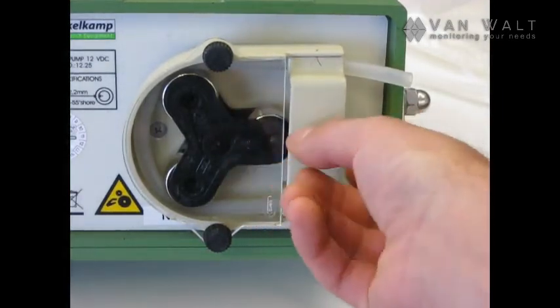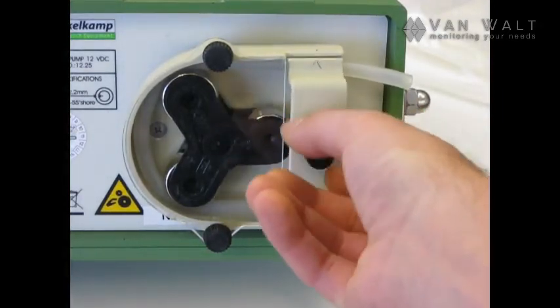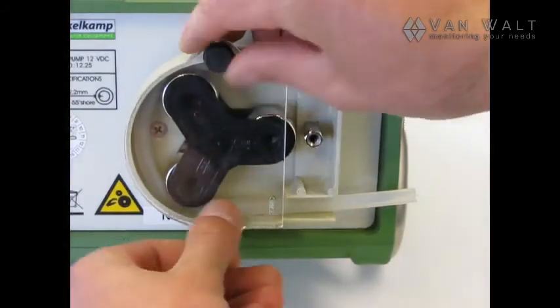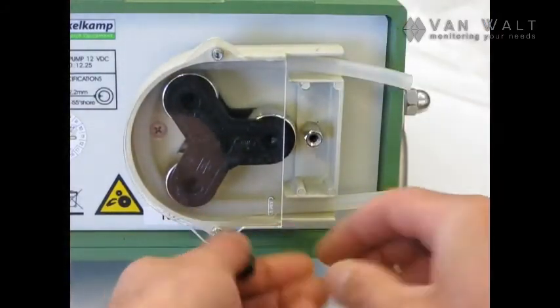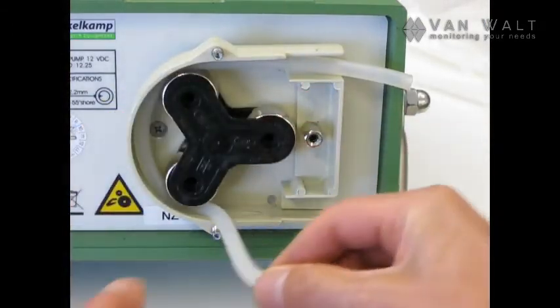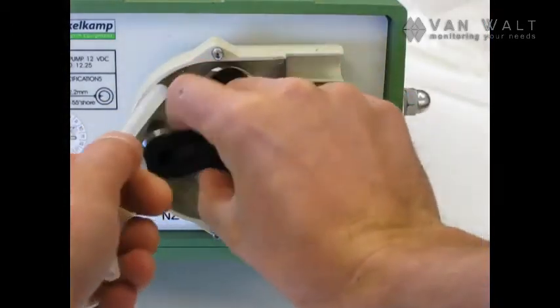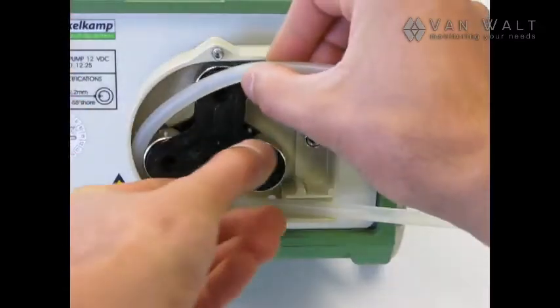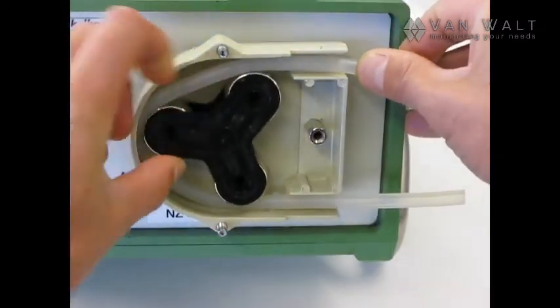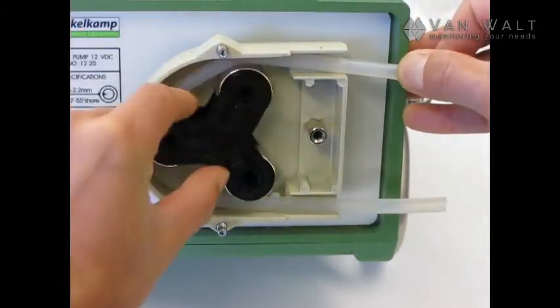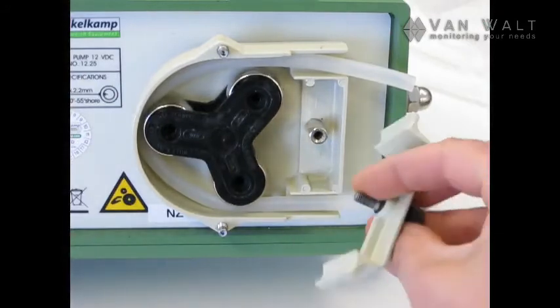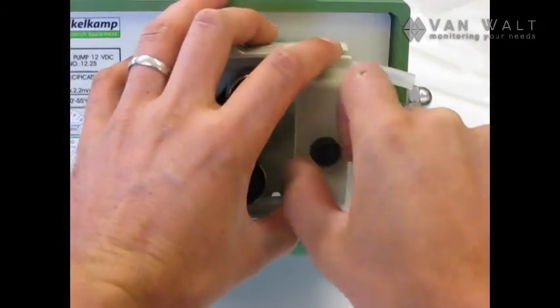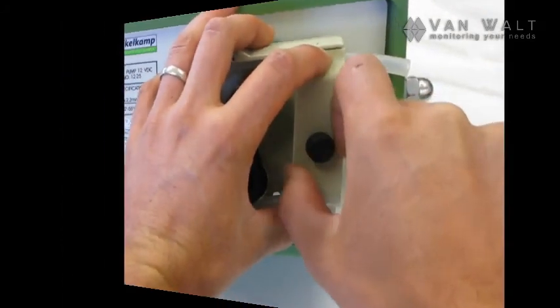Alternatively, we can load the pump up by taking the tube clamp and the guard off. And we can just do this manually. There we go. And then we can just put our clamp and the guard back on.